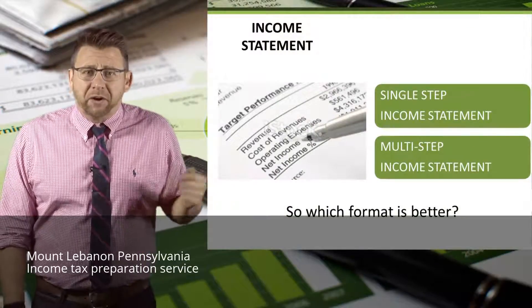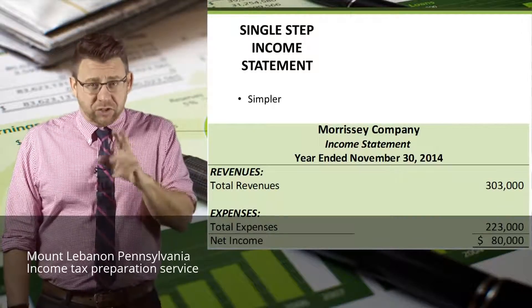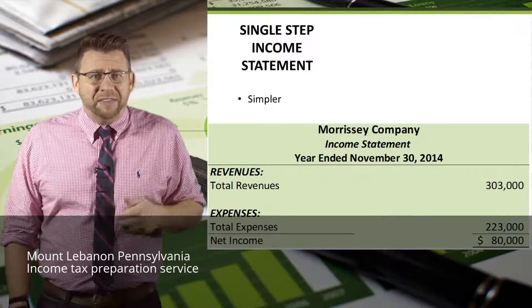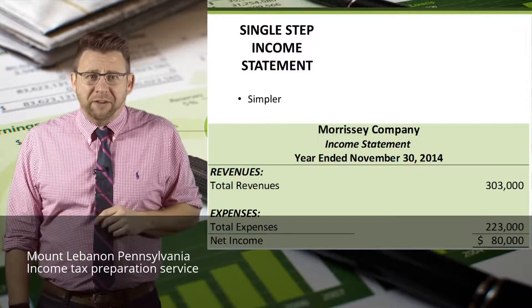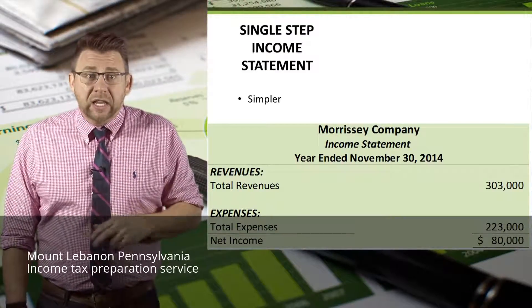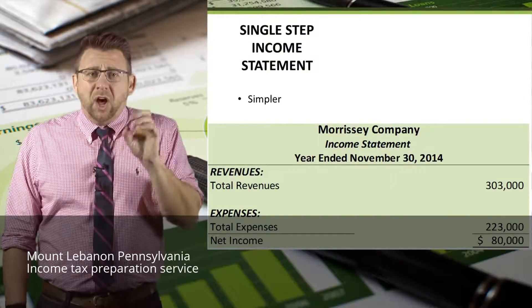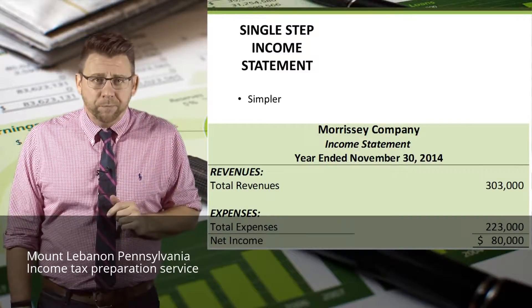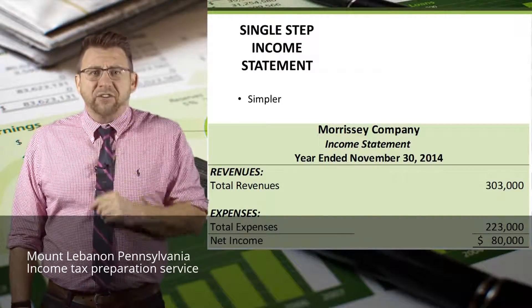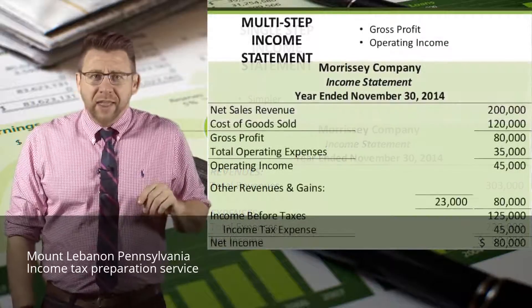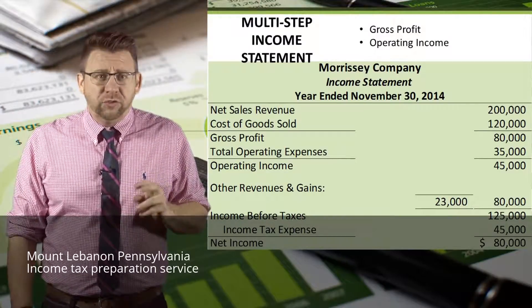So which format is better? Well, it depends. The single-step is easier to read and understand. For service firms which don't have gross profit, and there isn't a lot of benefit from distinguishing between operating and non-operating activities, it's the simple way to express profitability. But there are some drawbacks. In the example, this firm earned $80,000 of net income on $303,000 of revenue. But the question is, how repeatable is that next year? The multi-step format gives us better information about gross profit and operating income. That is why non-service firms use this format.